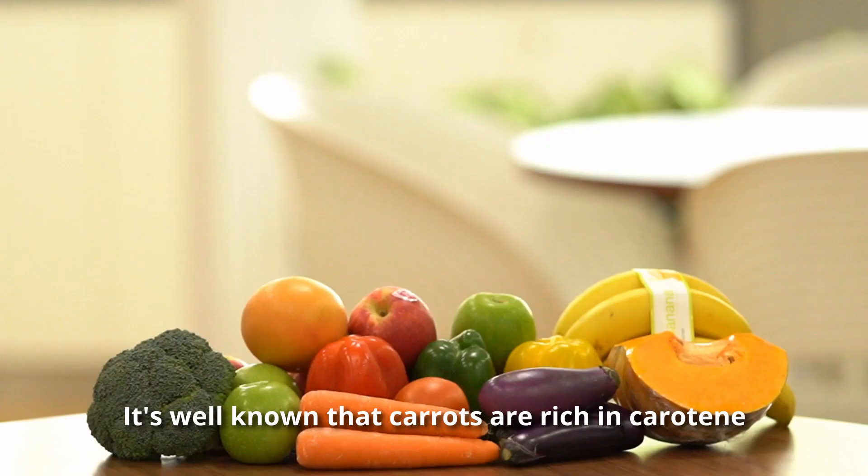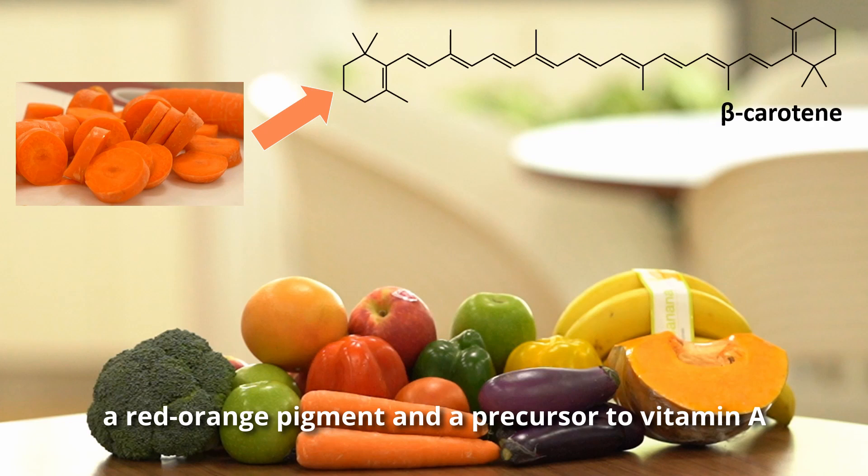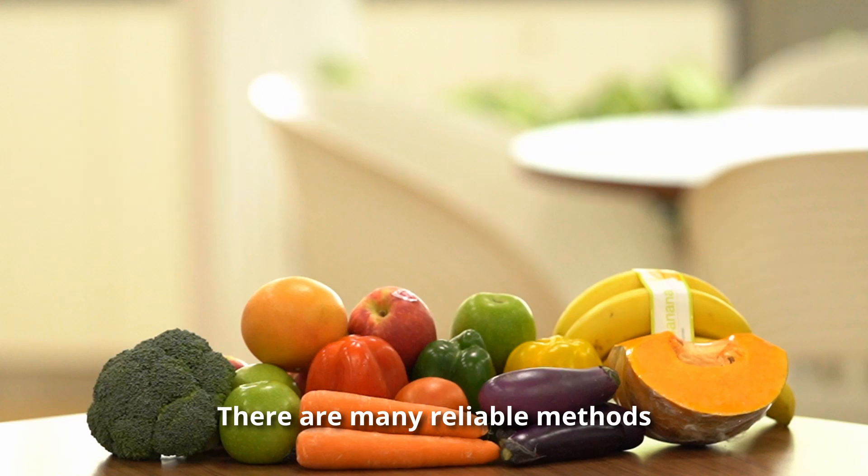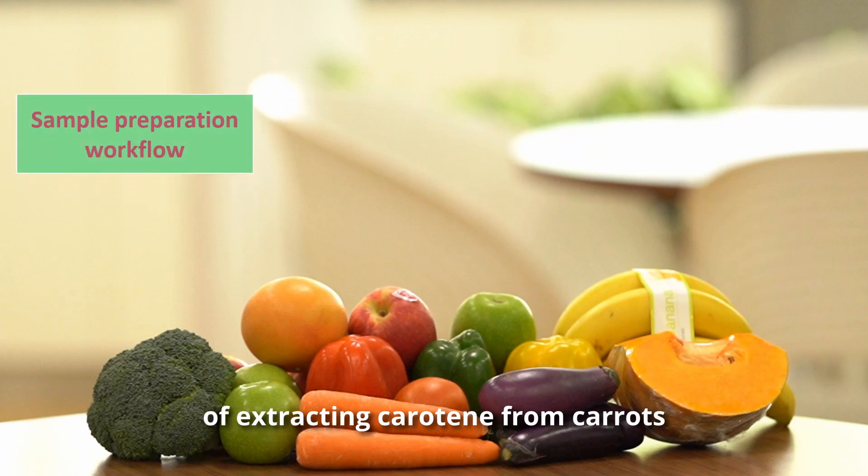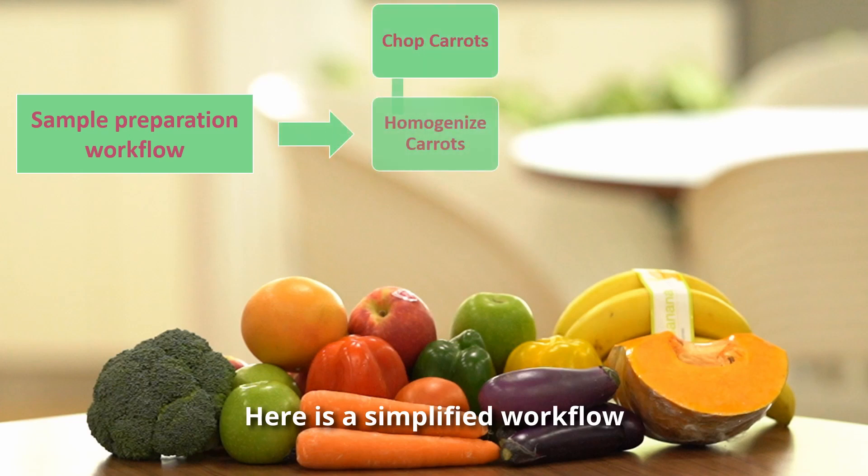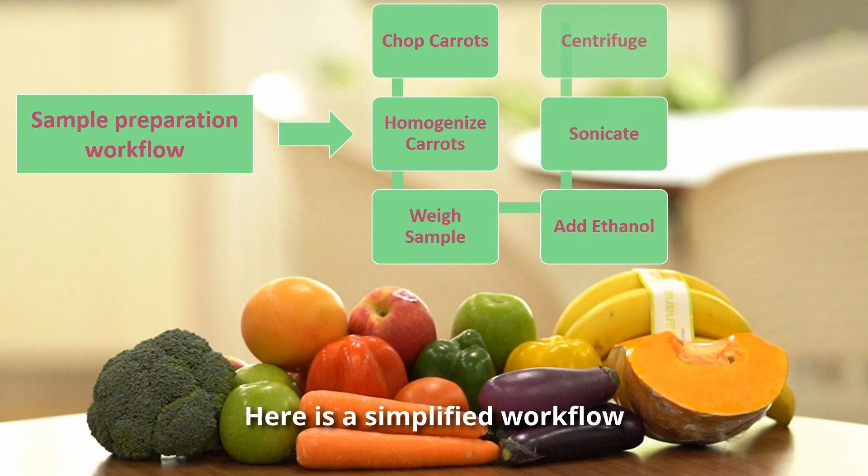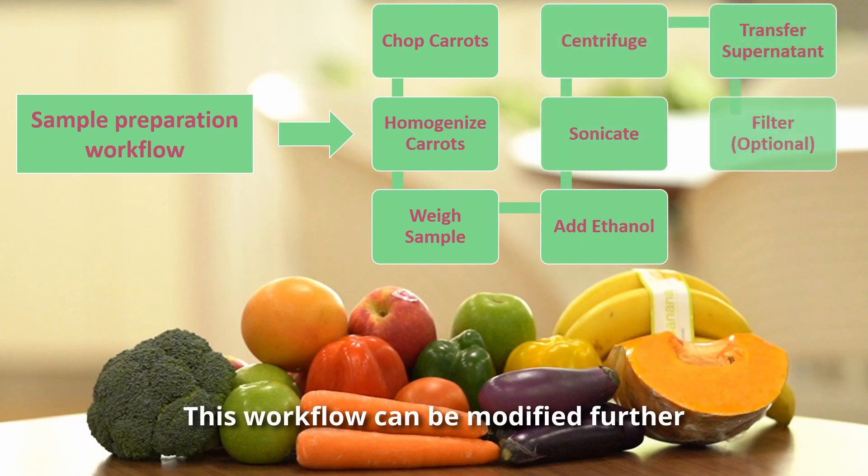It's well known that carrots are rich in carotene, a red-orange pigment and a precursor to vitamin A. There are many reliable methods of extracting carotene from carrots. Here is a simplified workflow. This workflow can be modified further.